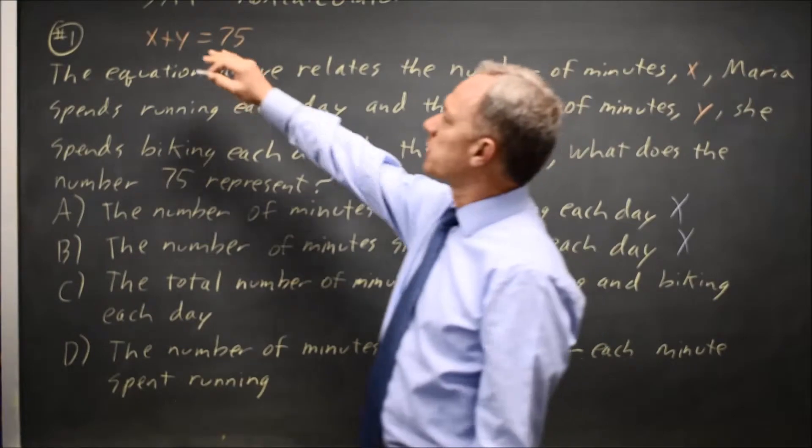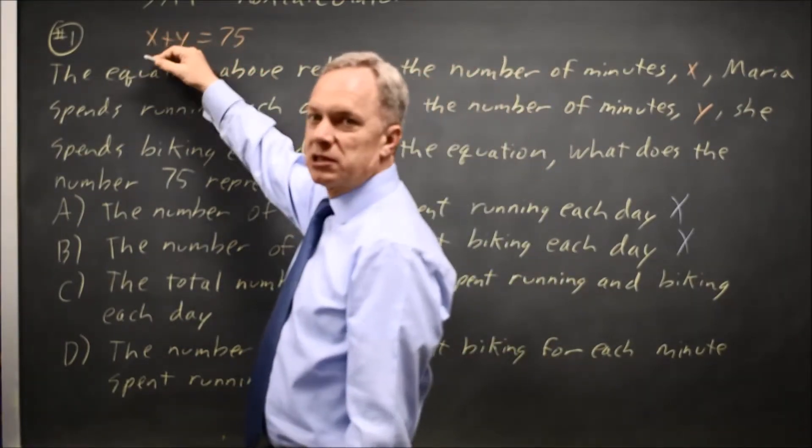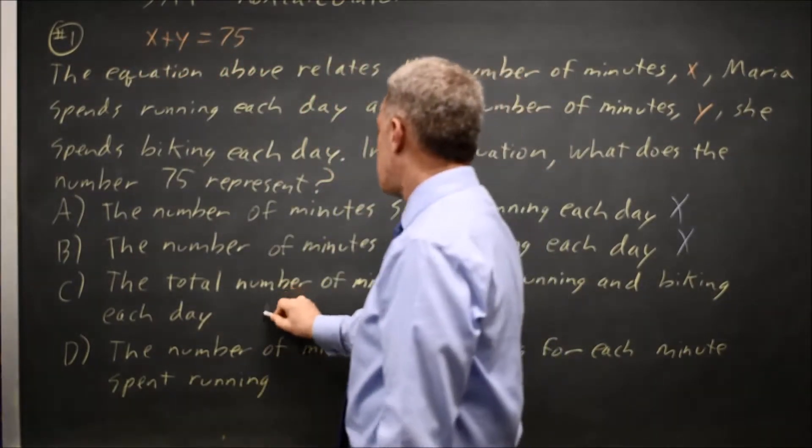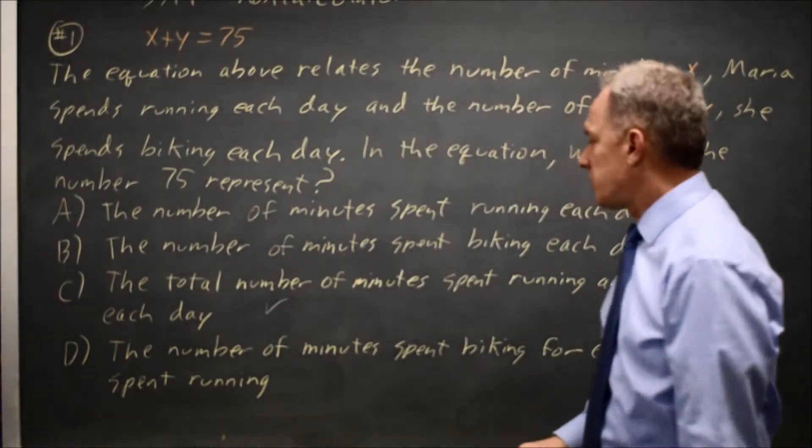Since the equation shows x + y = 75, that's the total minutes running plus the minutes biking. So 75 represents the total number of minutes spent running and biking each day.